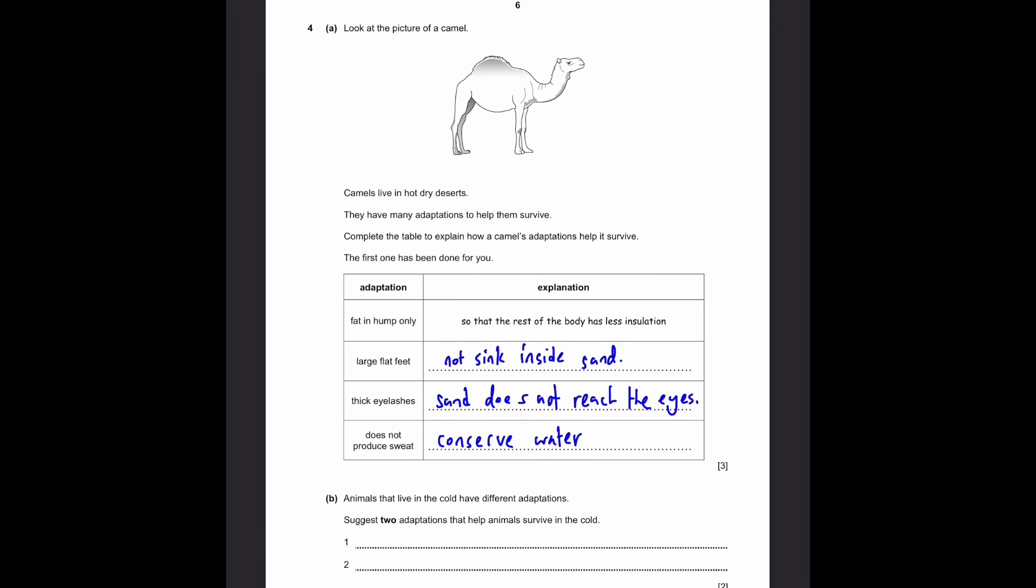Part B. Animals that live in the cold have different adaptations. State two adaptations that help animals survive in the cold. So one is quite obvious - a layer for conserving heat. And the second one can be thick fur. Because, you know, polar bears have a lot of fur. So I'm just writing this with respect to polar bears, but you can write it with respect to any other animal.